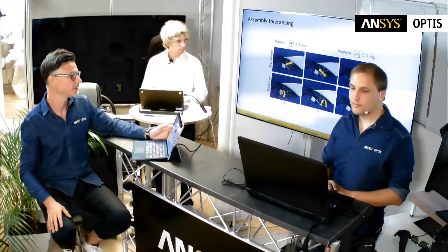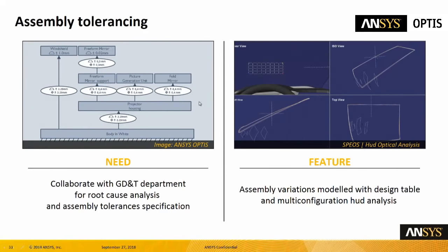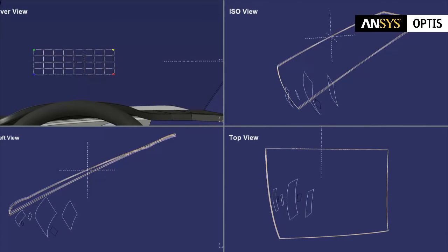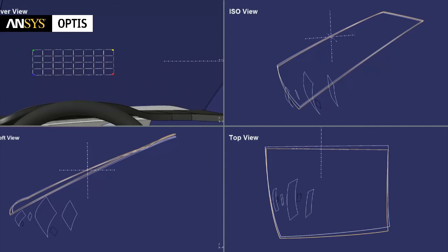The last part of the webinar: assembly tolerancing. Once you produce the windshield and install it on the car, it's very important to check assembly tolerancing and the impact it will have on HUD quality. Since we use the windshield as an optical surface, any change on this surface automatically affects the head-up display. We can simulate all the stacks of assembly tolerancing. The goal is to simulate different positions of the windshield and produce a report that converts acceptance criteria in terms of optical quality into mechanical assembly tolerances.